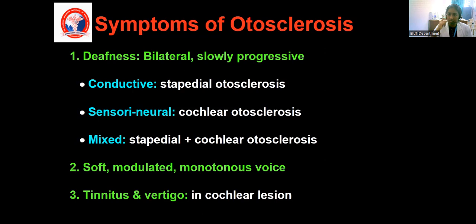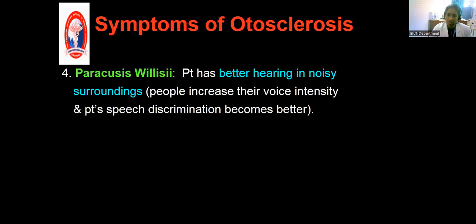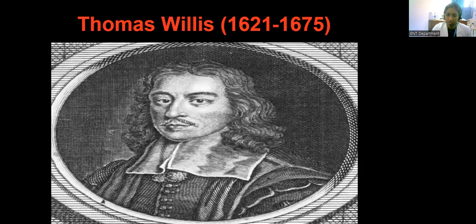Vertigo and tinnitus are symptoms which are usually not seen commonly, but if present, we should suspect cochlear involvement — cochlear type of otosclerosis. Paracusis Willisii is the condition in which the patient usually hears better in a noisy environment than in a quiet environment. Normally, we hear better in quiet. But in otosclerosis, since the patient has conductive hearing loss, the opposite person raises their voice in a noisy environment, so the patient hears better. Speech discrimination also becomes better in a noisy environment. This was introduced by Thomas Willis.